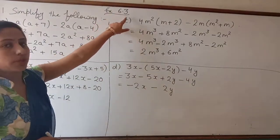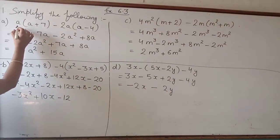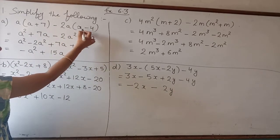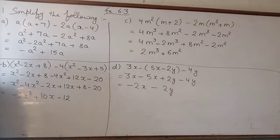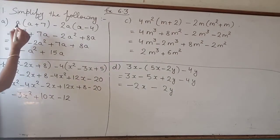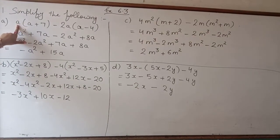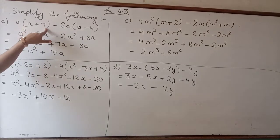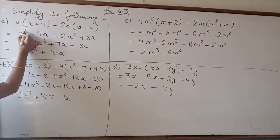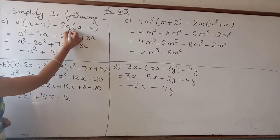Now we will start exercise 6.3. Your first question is: simplify the following. First part is a(a+7) - 2a(a-4). So here equals...